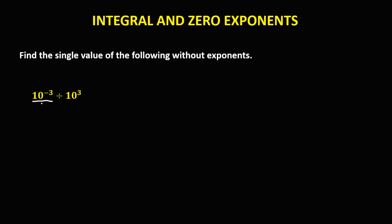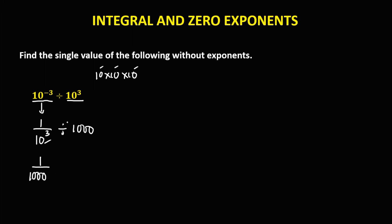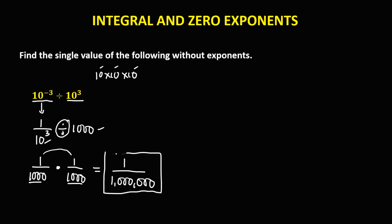Next given: rewrite as 1 over 10 to the power positive 3. For 10 to the power 3: 10 times 10 is 100, times 10 is 1,000. We then change the operation to multiplication and find the reciprocal — 1 over 1,000. Simplifying: 1 times 1 is 1, over 1,000 times 1,000 is 1,000,000. The answer is 1 over 1,000,000.